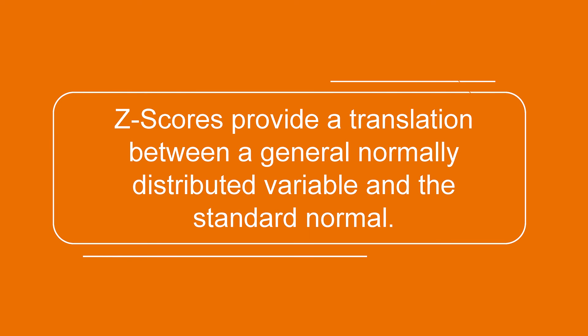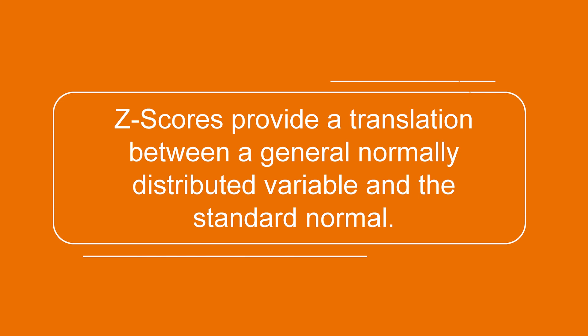The introduction of the z-score leads us to one more point. While the standard normal has easy lookup tables, in the case of real-world applications, we don't have a z-table for that specific distribution. Standardized z-scores provide a translation between a generally normally distributed variable and the standard normal distribution. They do so through the following equation. The z-score of some value x for a normal distribution of the general mean mu and a standard deviation sigma is equal to the value minus the mean, all divided by the standard deviation.